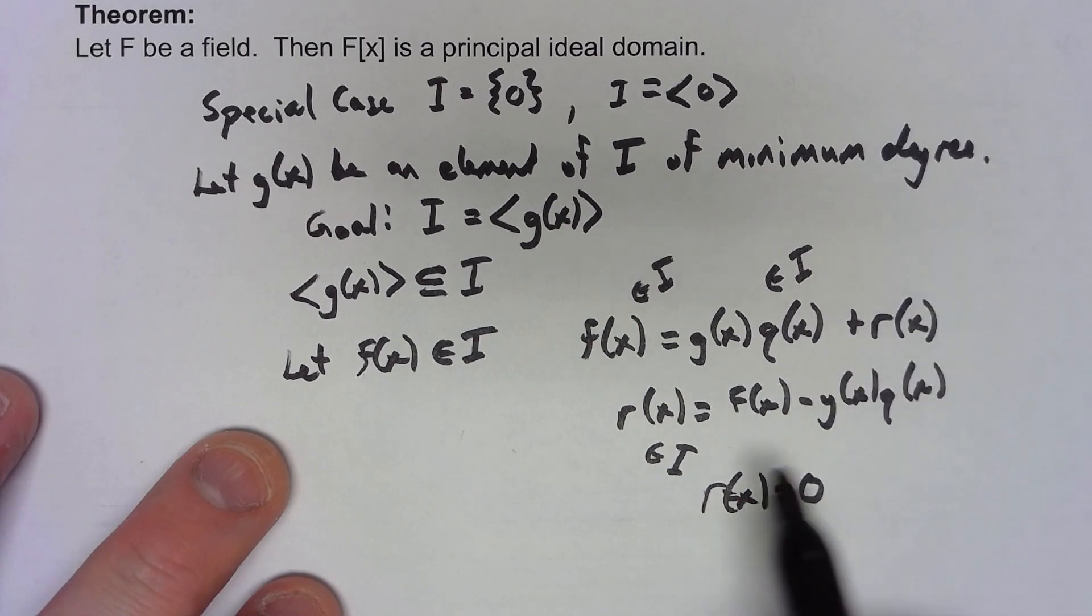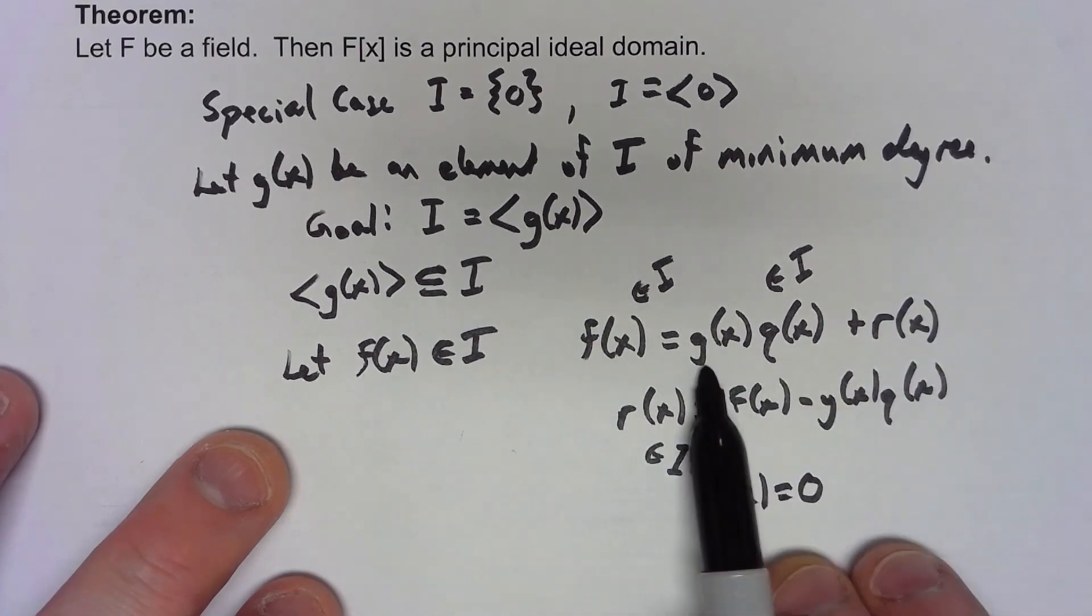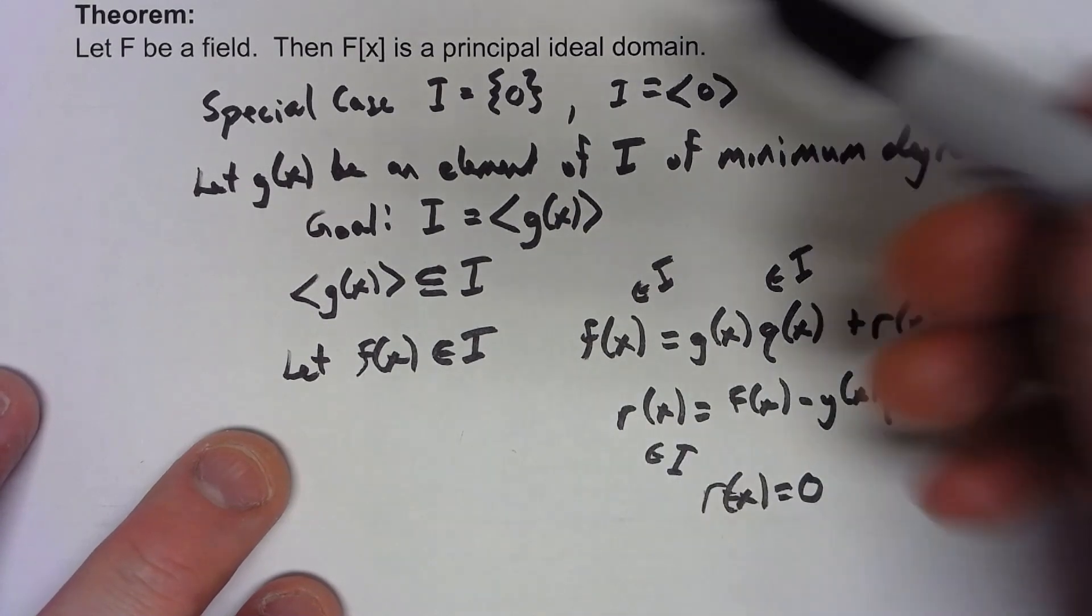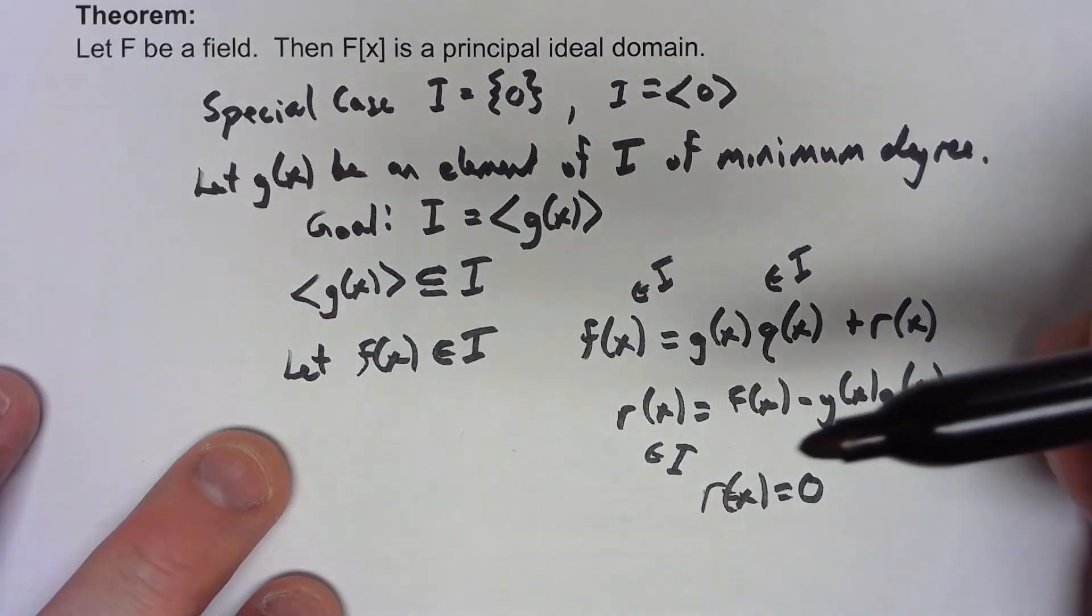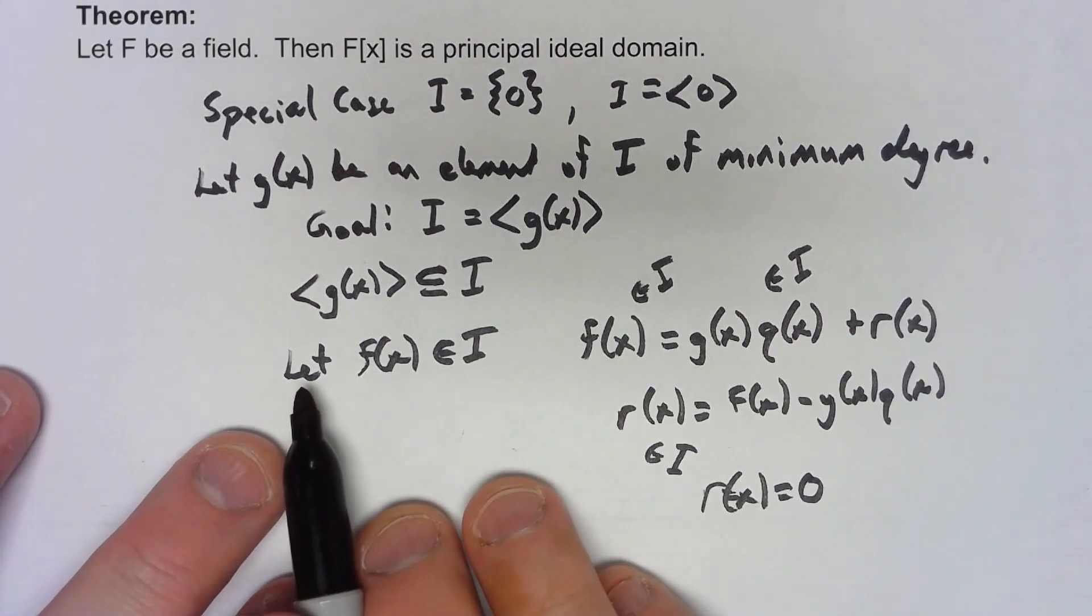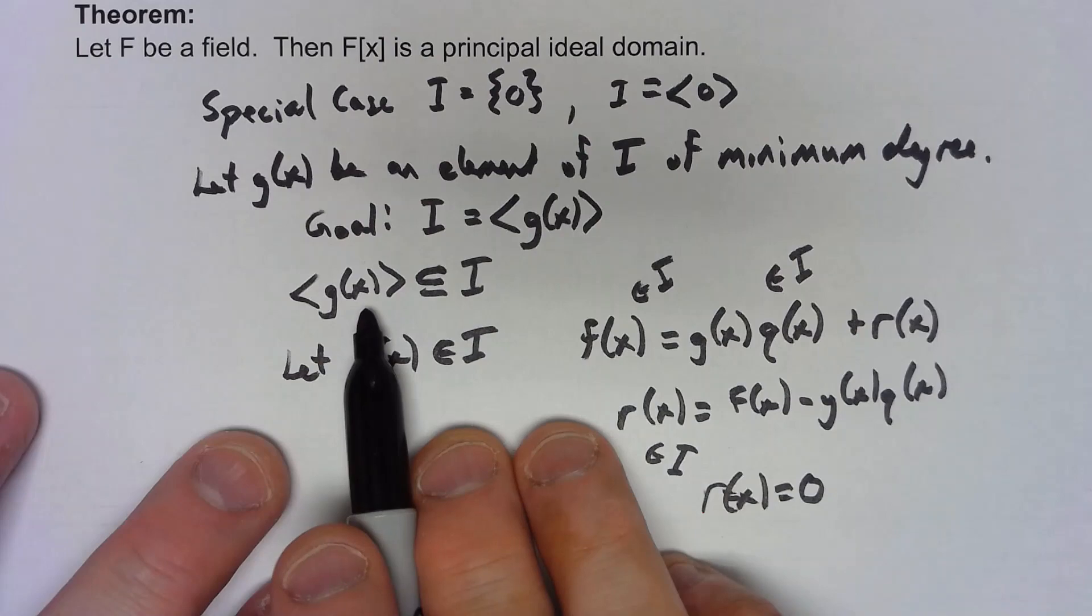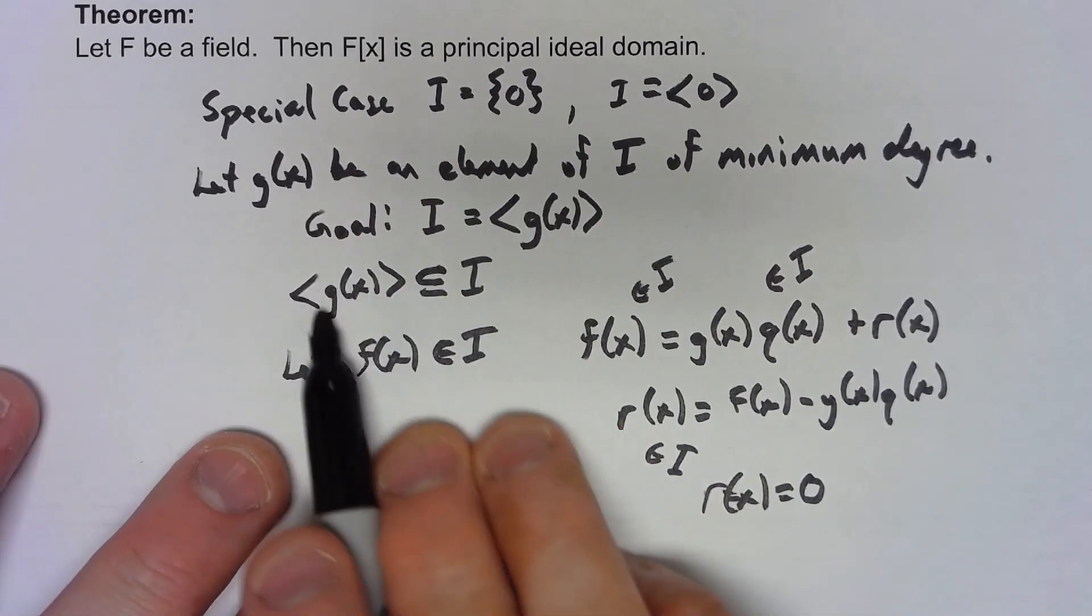And so that would mean that f(x) is a multiple of g(x), which means that f(x) is in this. So there we go, every ideal has to be generated by this.